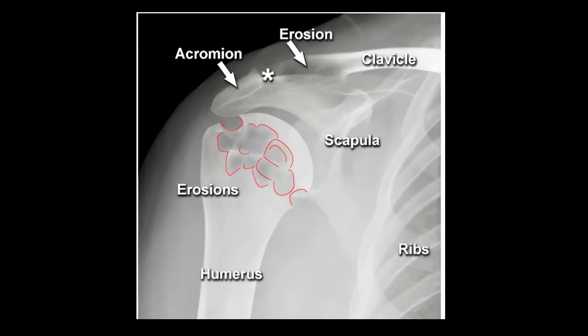In rheumatoid arthritis of the shoulder, large periarticular erosions form around the humeral head, and erosion of the distal clavicle is a classic feature of advanced disease affecting the shoulder. This causes widening of the acromioclavicular joint.